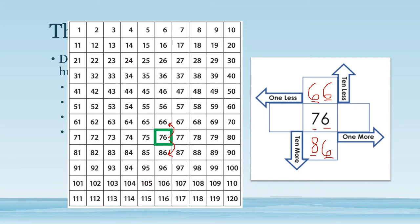Now let's find one more or one less. To find one less, we just have to go back one space. So one less than 76 is 75. To find one more, we have to count up one space. So one more than 76 is 77.